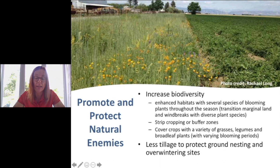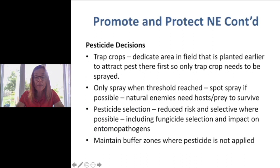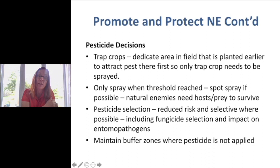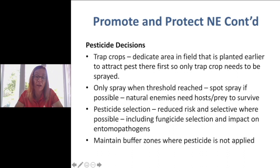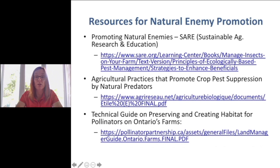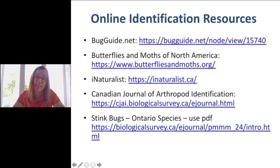How do we promote these natural enemies? The push for pollinator habitat is very similar to what natural enemies need — biodiversity with several species blooming at different times, because some natural enemies need nectar and pollen too. Any initiatives that do buffer zones, change marginal land over, or have strip cropping that brings natural enemies close to the crop is great. Also less tillage — some of these overwinter in and on the soil and need undisturbed ground. Consider trap crops, only spray at threshold using reduced-risk products, and maintain buffer zones to keep natural enemy habitats safe.